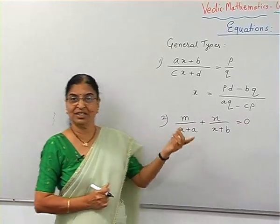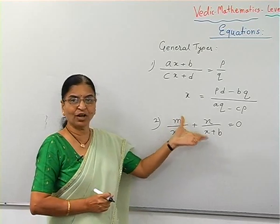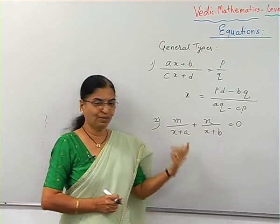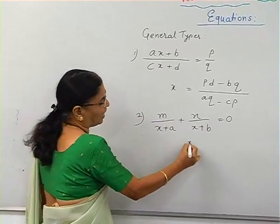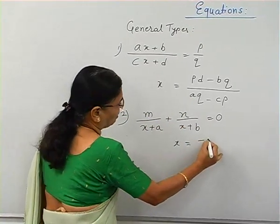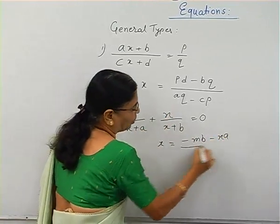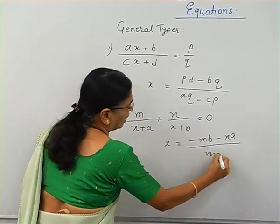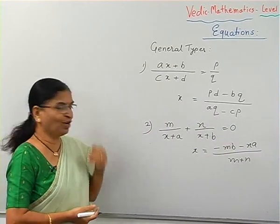Now there are some types of equations where the right-hand side is equal to zero. Here, we can cross multiply to get MX plus MB and then NX plus NA. Taking X common, we get the value of X directly as minus MB minus NA upon M plus N. So this is our general formula for the solution of this type.